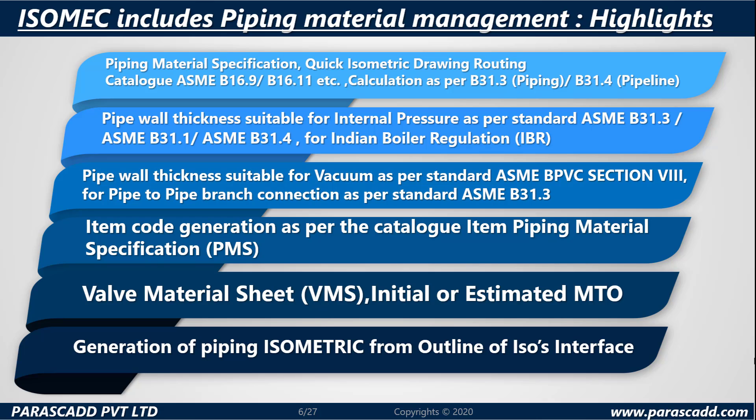Pipe wall thickness must be suitable for internal pressure as per standards ASME B31.3, ASME B31.1, and ASME B31.4, as well as for Indian Boiler Regulation (IBR). Pipe wall thickness must also be suitable for vacuum as per standard ASME BPVC Section 8, and for pipe-to-pipe branch connection as per ASME B31.3. Item code generation is available as per the catalogue item piping material specification (PMS).